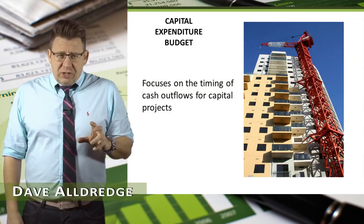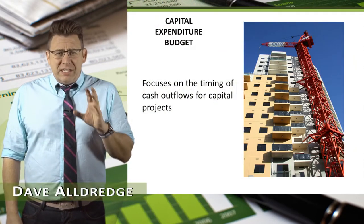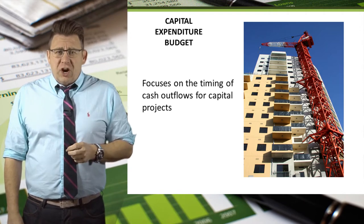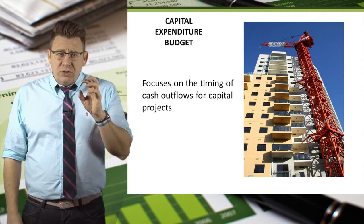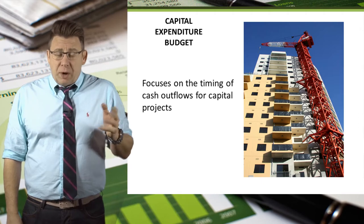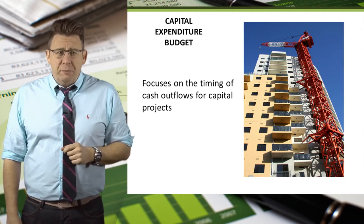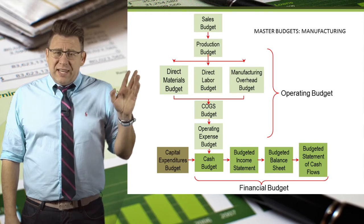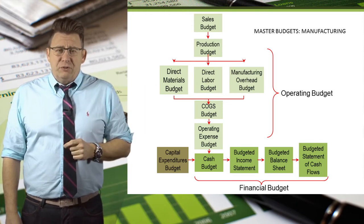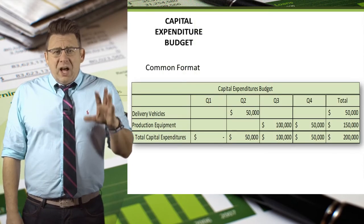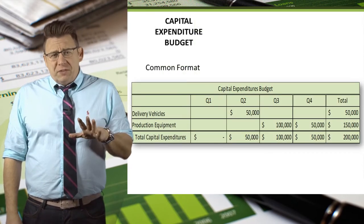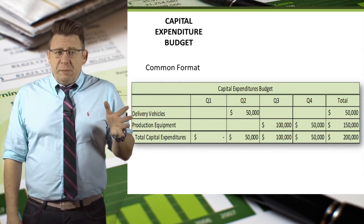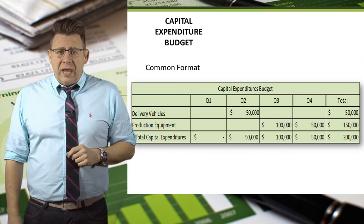The capital expenditures budget is one of the easier budgets to prepare. Recall that capital expenditures are the outflows to construct capital projects like property, plant and equipment. You can see that the capital expenditures budget is the eighth budget completed in the master budget process. A common format for this budget is to list the capital projects and when the expected cash expenditures will happen.